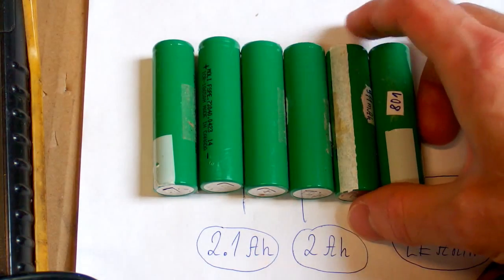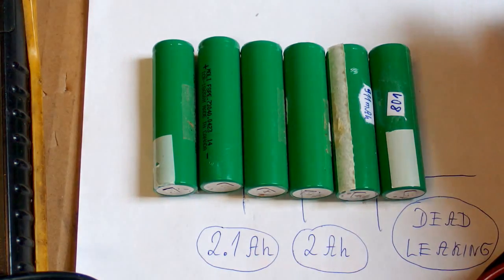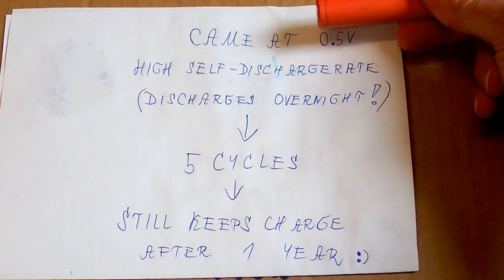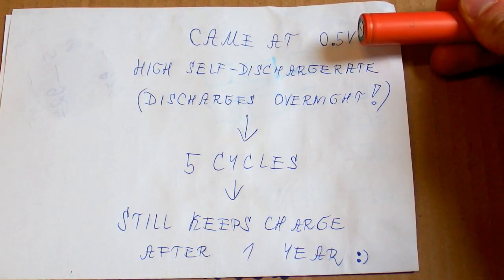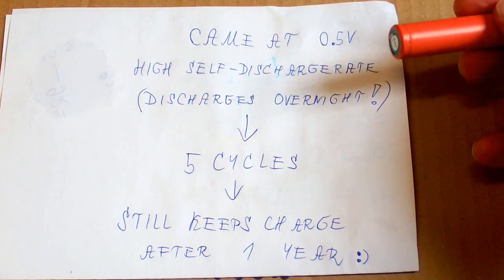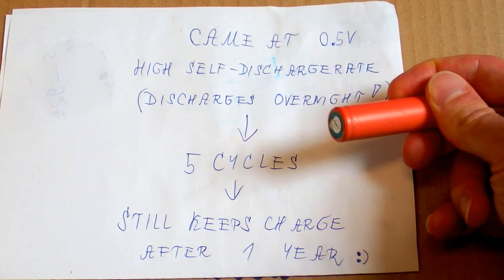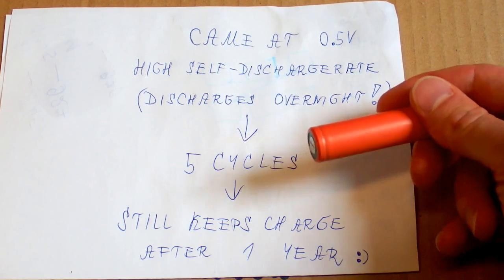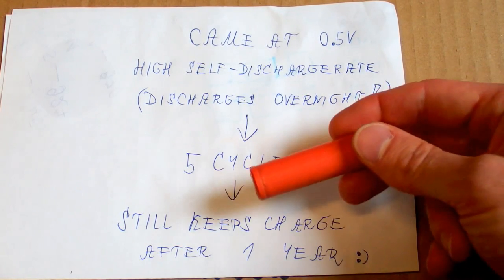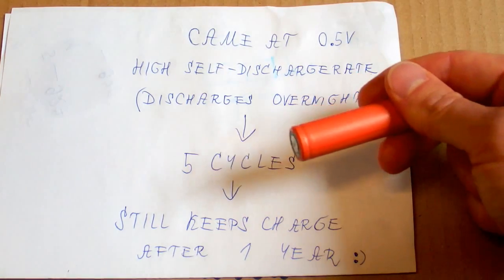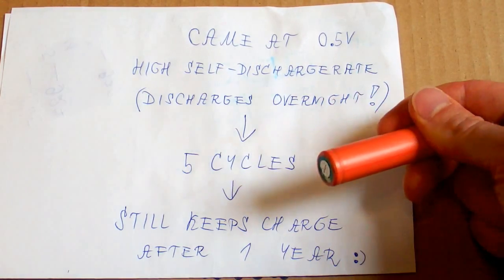But it seems that after few cycles this self discharge can disappear. This is another cell from a laptop and it came at about 0.5 volts only. It had a really high self discharge rate. It would discharge completely overnight. I made five cycles with this one and now it still keeps charge after one year. So it seems that sometimes just five cycles can recover a battery with a super high self discharge.